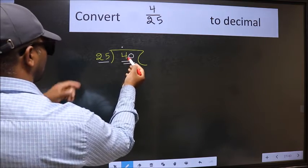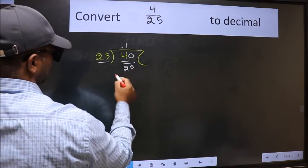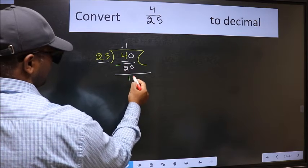A number close to 40 in the 25 table is 25 once, which is 25. Now we should subtract. We get 15.